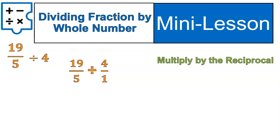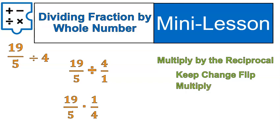And then we're just going to follow the steps for division of fractions. We multiply by the reciprocal, which means we keep the first fraction. 19 over 5 becomes 19 over 5. Change the symbol from division to multiplication. And the fraction, 4 over 1, becomes the reciprocal. It flips upside down and becomes 1 over 4. Then we multiply. 19 times 1 is 19. 5 times 4 is 20. In this case, it's simplified, so we don't need to do anything else. 19 over 20 is our final answer.